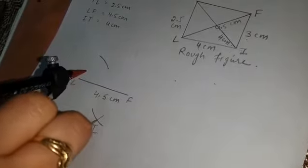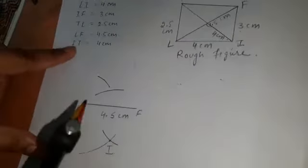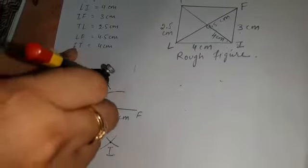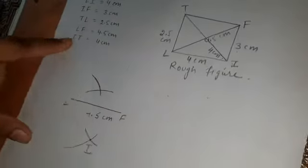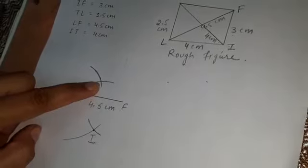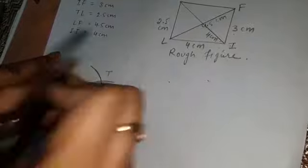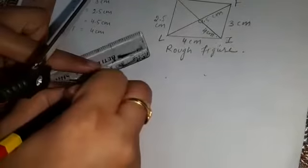This is a very important point — this arc must be drawn from point I. Take I as center, put your compass tip on point I, and draw the arc. Now see, these two arcs are not intersecting each other, so extend this arc to make them intersect. Once the two arcs intersect, that intersection point is point T.